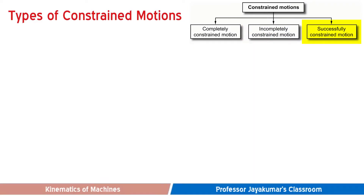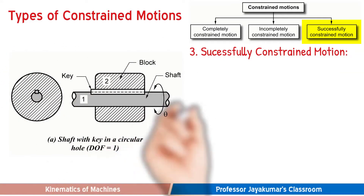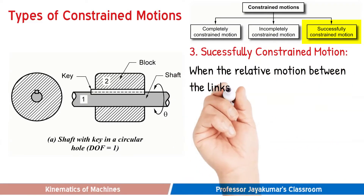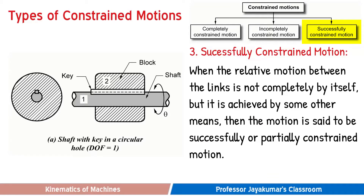Finally, we have successfully constrained motion. In this type, the incompletely constrained motion is successfully converted into a completely constrained motion by means of some external means. The incompletely constrained motion of a circular shaft in a circular hole can be successfully constrained to a pure rotational motion without sliding motion by providing a keyway in the circular shaft.